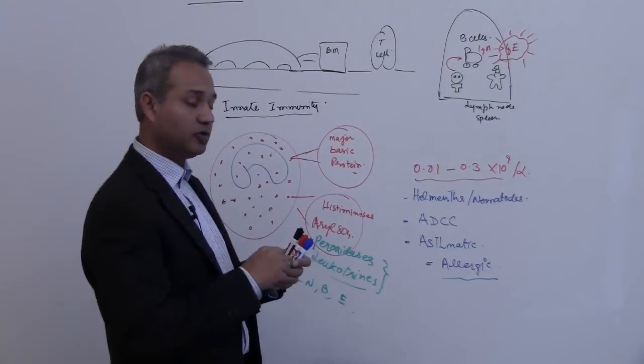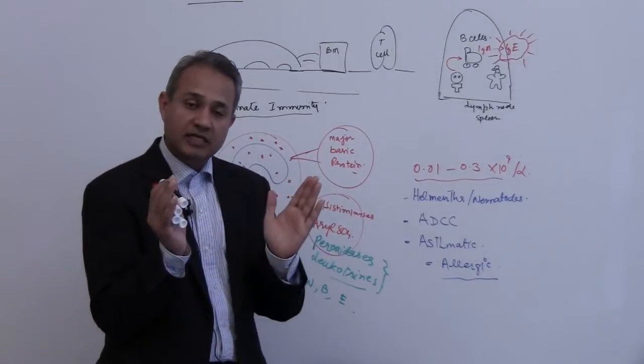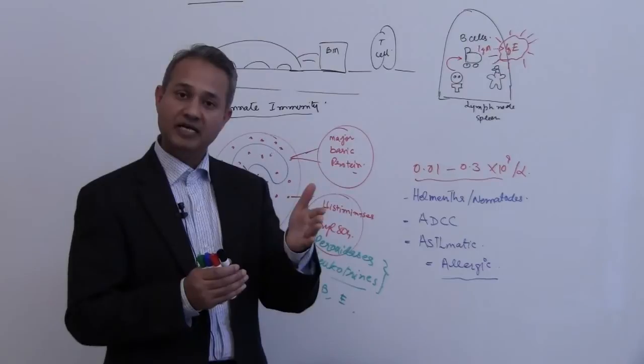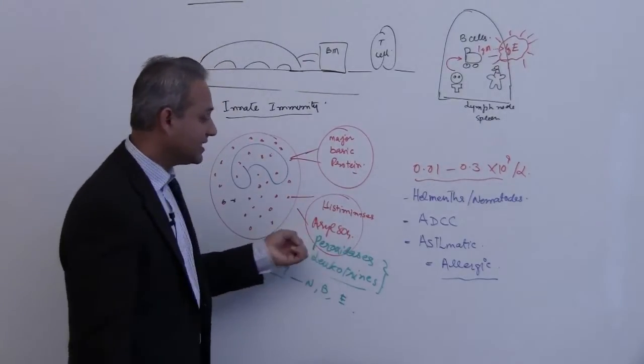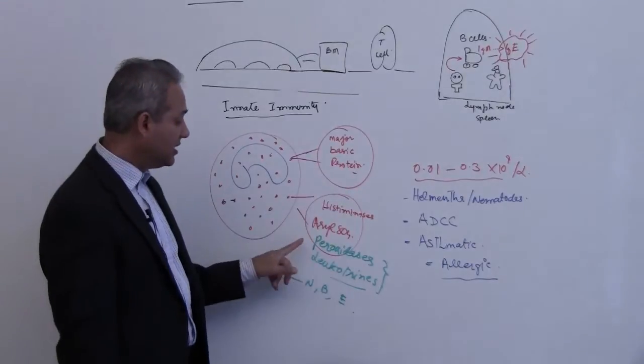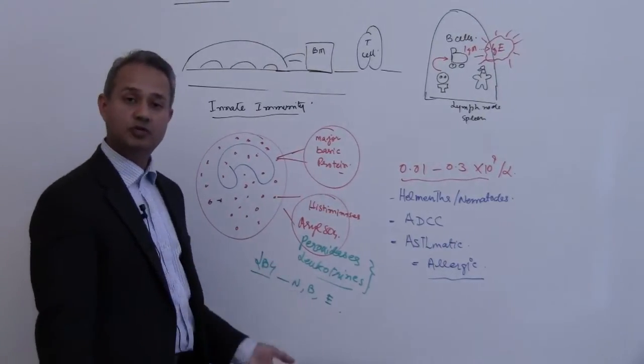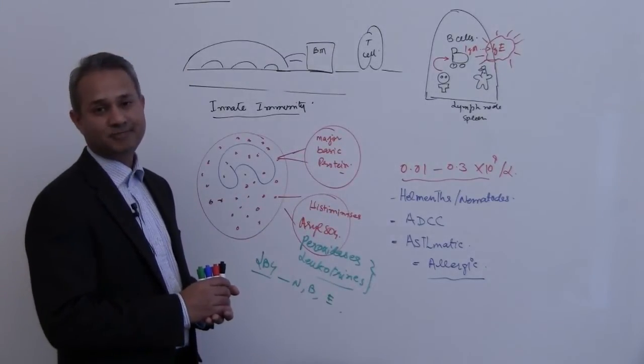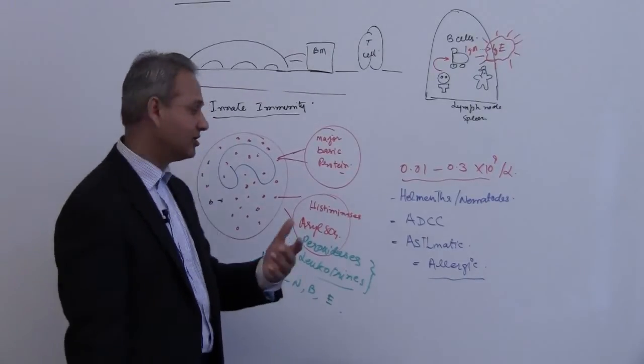So these guys are actually supposed to be nice guys who would dampen the activity of the allergic cells, that is mast cells and basophils. But whenever they degranulate, in that process they would also throw out peroxidases and leukotrienes which would actually increase the inflammation and cause tissue damage. So not really, not very helpful. They try but they are not there yet.